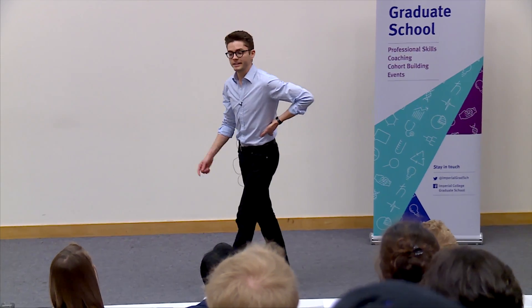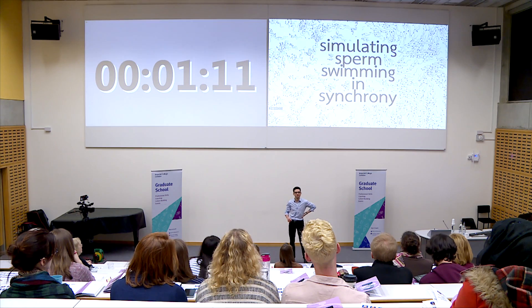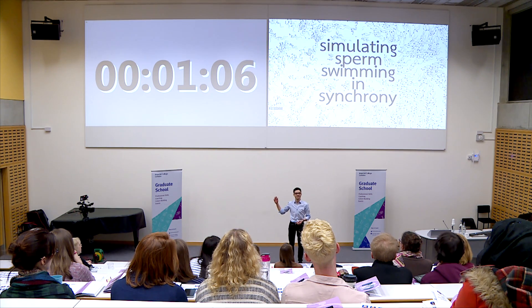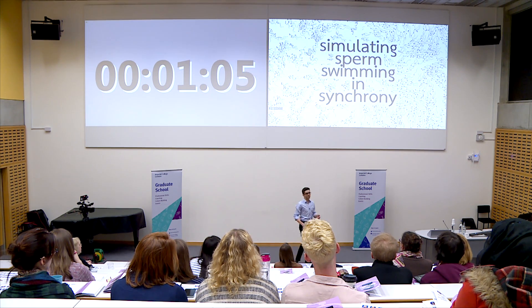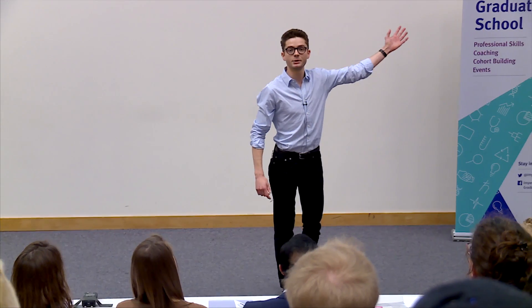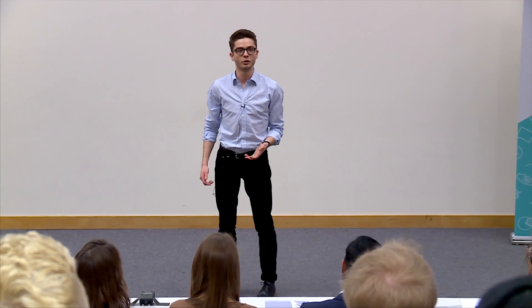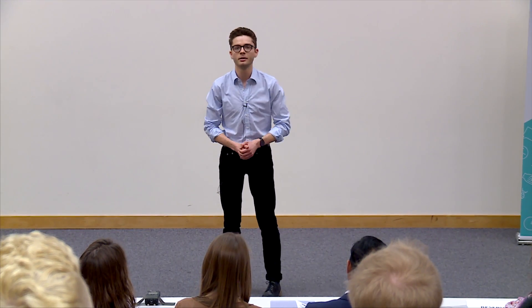Now, why is this interesting? Well, it turns out this has an analogy in biology. Sperm of hamsters form synchronized clusters, whereas sperm of sheep is dense and swirly. And this can actually be used to measure their fertility for farming.